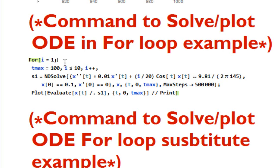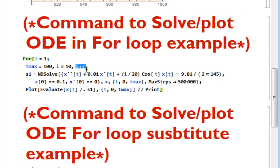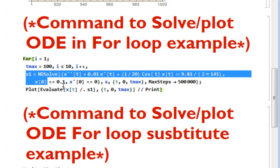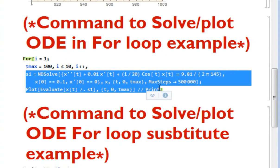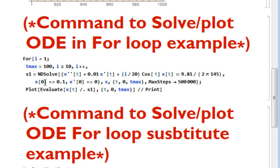Here I initialize i equals 1 and set tMax as the interval — I want the ODE output from 0 to 100. The condition is i less than 10 with i++ as the increment. In the main body, we use the for loop to solve the differential equation while varying any constant or pre-multiplier — for example, the pre-multiplier of cos(t). This is the advanced version of the previous tutorial.